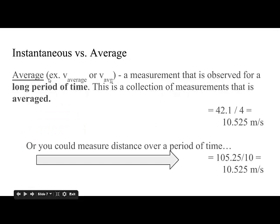Average, on the other hand—you can use the term average in the subscript to modify velocity, or avg to modify velocity. Average is a measurement that is observed for a long period of time. This is a collection of measurements that is averaged. In math class, to average numbers, you add them all up and divide by the number of numbers.